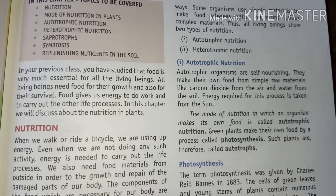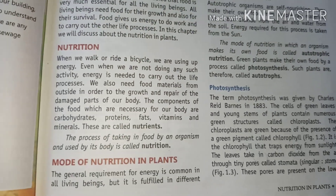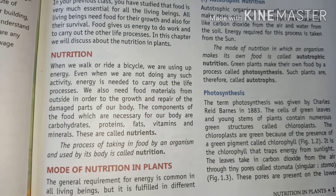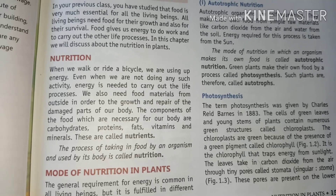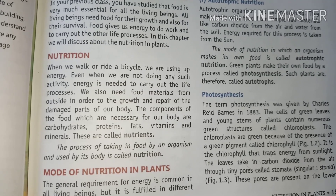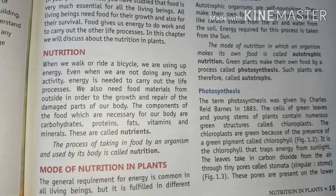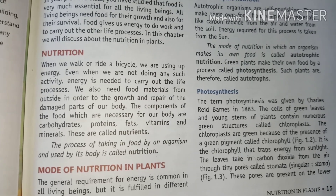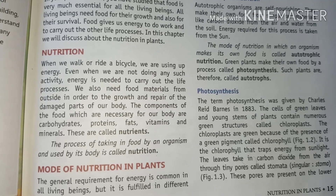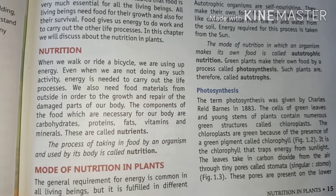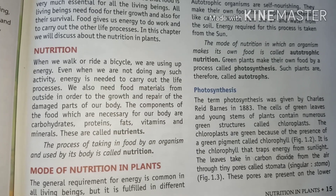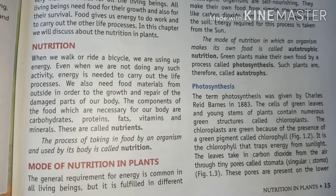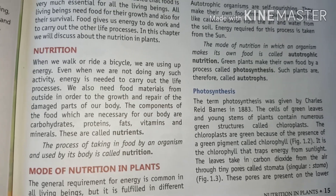Food gives us energy to do work and to carry out other life processes. In this chapter we will discuss nutrition in plants. When we walk or ride a bicycle, we are using up energy. Even when we are not doing any such activity, energy is needed to carry out life processes. We also need food material from outside for the growth and repair of damaged parts of our body. The components of food which are necessary for our body are carbohydrates, proteins, fats, vitamins, and minerals — these are called nutrients. The process of taking in food by an organism and its use by the body is called nutrition.